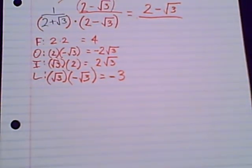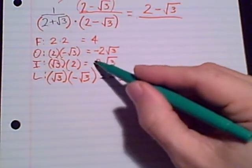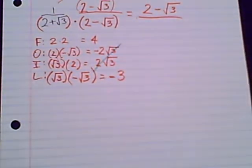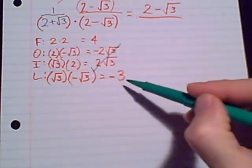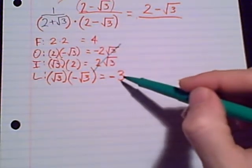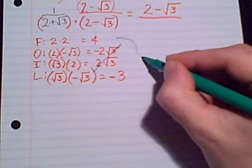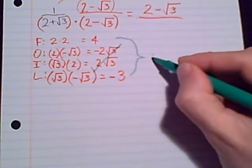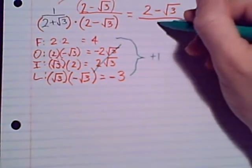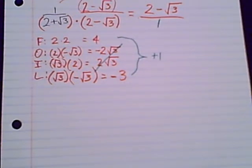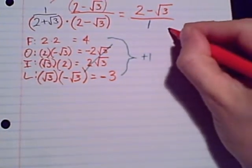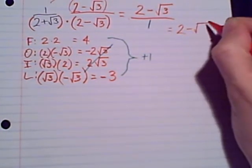Right after FOIL, we look for, do we have like terms to combine? Definitely we want to see that the outer and inner terms cancel. But also, we can combine first and last, 4 with negative 3, nice positive 1. So that's our denominator, positive 1. And usually when we end up with that denominator of 1, we just let it go. So our answer is 2 minus radical 3.